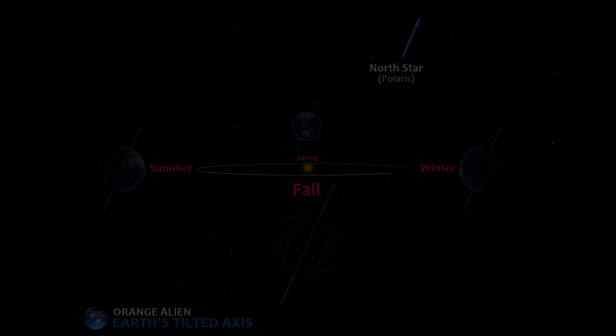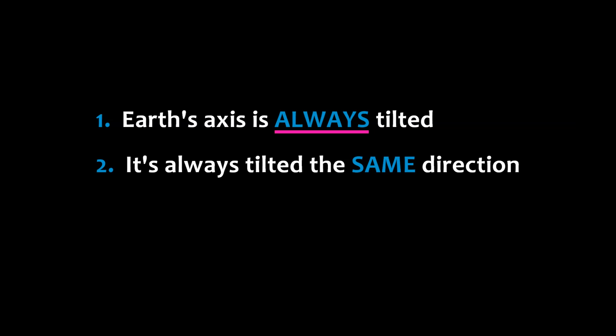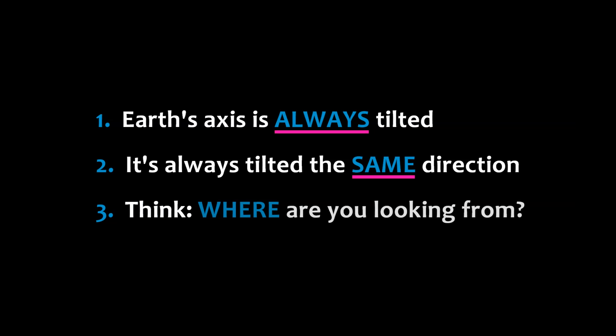So what are the main things I want you to take away from this? For one, Earth's axis is always tilted. Two, the axis is always tilted in the same direction. And three, you have to think about where you are looking from. Because one alien will see one thing, and another alien on the other side of Earth's orbit will see it totally differently.